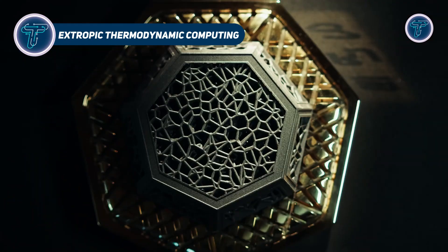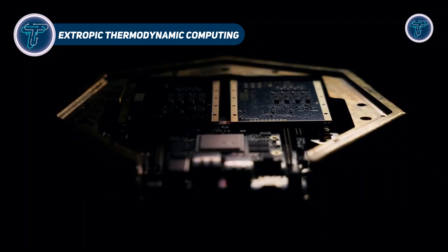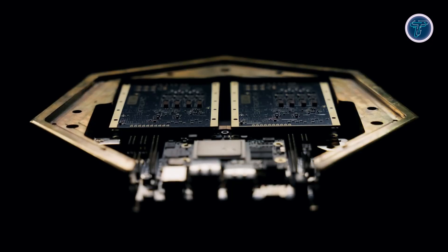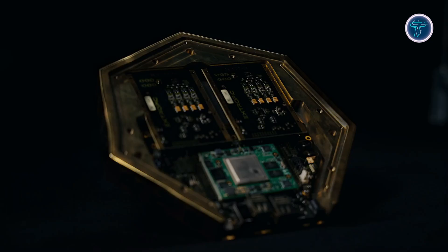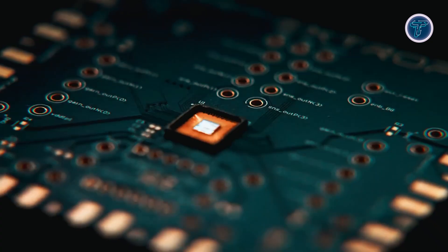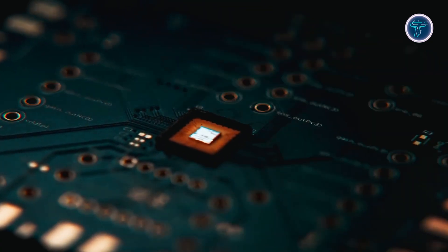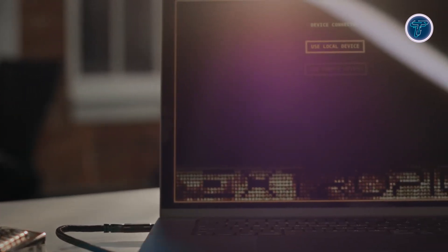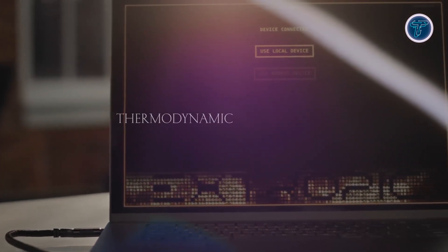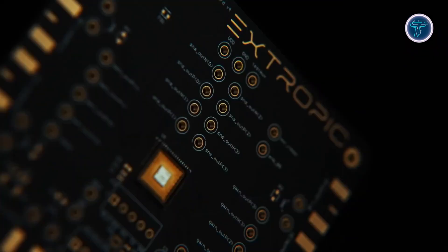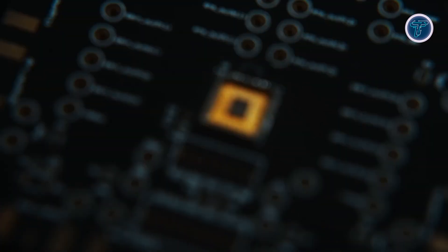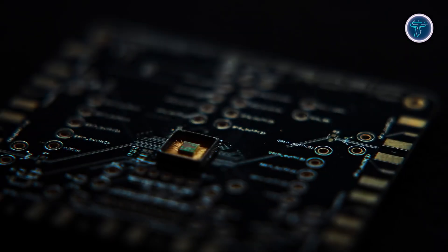Extropic thermodynamic computing introduces a bold new approach to AI hardware by turning natural thermal noise into useful computational power. Instead of forcing electrons into perfectly stable states, this technology uses probabilistic p-bits that constantly fluctuate between 0 and 1, creating a built-in source of randomness. This allows Extropics hardware to generate probability samples directly, which is a major advantage for energy-based and generative AI models that normally require heavy matrix calculations.